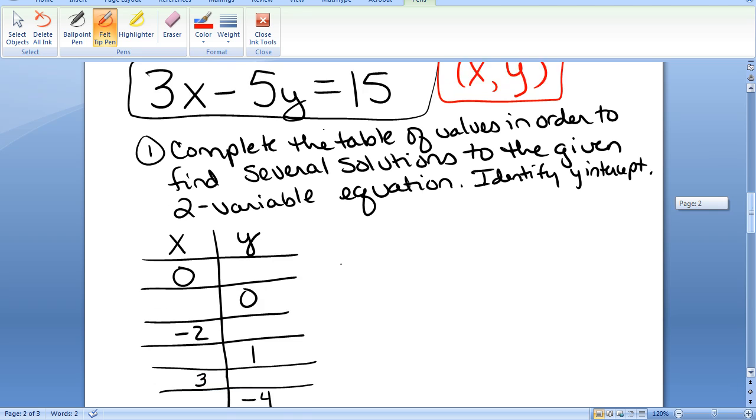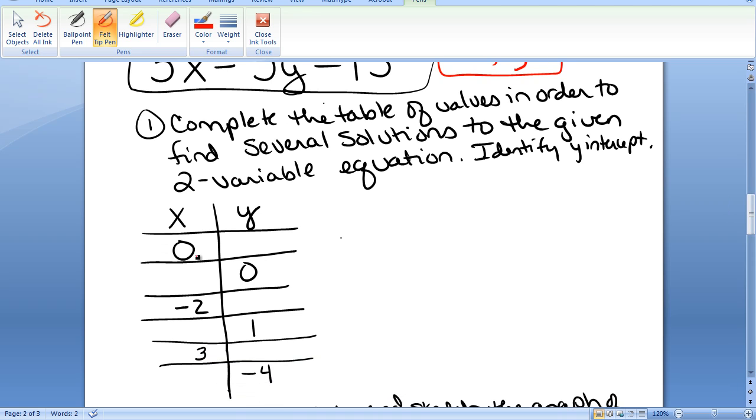So, in the table here, I have given some X values and some Y values. When we're given an X value, we can plug it into the equation and solve for the unknown Y value. When we're given a Y value, we can plug it into the equation and solve for the unknown X value. Let me just copy down the equation here. 3X minus 5Y equals 15.